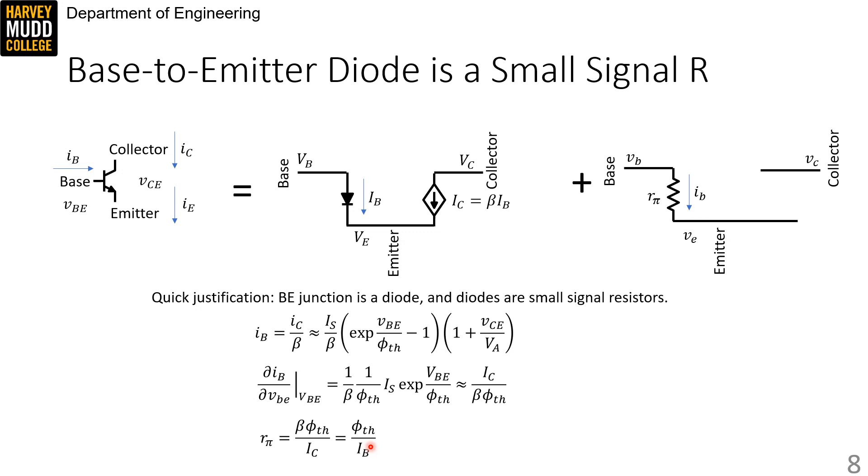However, it's worth noting when you're making general small signal models, you need to take derivatives of the variable you care about with every variable that could control it.